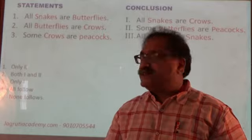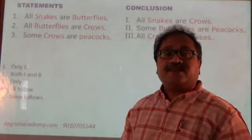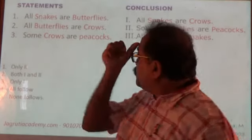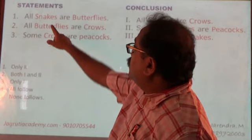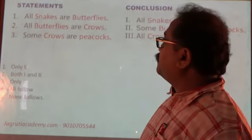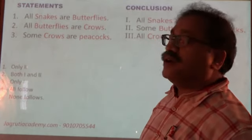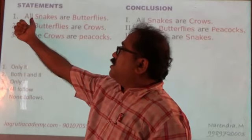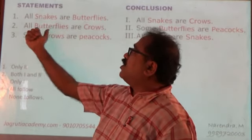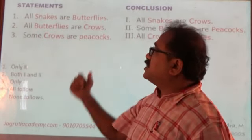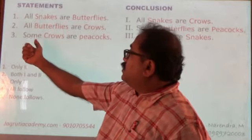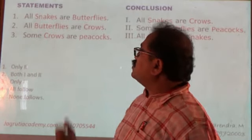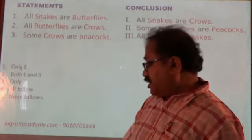Hello friends. Let's take this detection problem. All snakes are butterflies. So it starts with 'all.' Second, all butterflies are crows. The third one starts with 'some.' So some crows are peacocks.